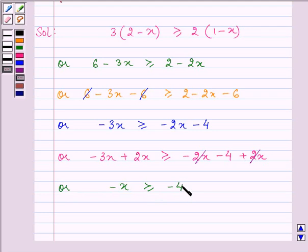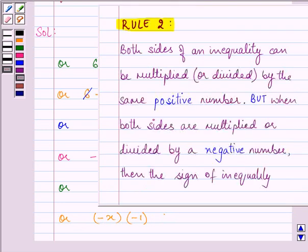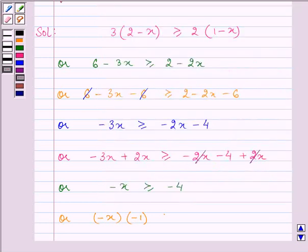Therefore, on multiplying both the sides by minus 1, we have it as minus x getting multiplied by minus 1. And we know that according to rule 2, when we multiply or divide by a negative number, then the sign of inequality gets reversed.